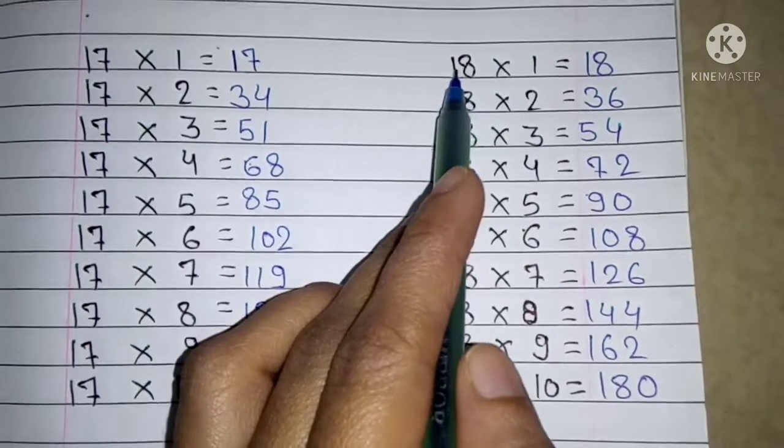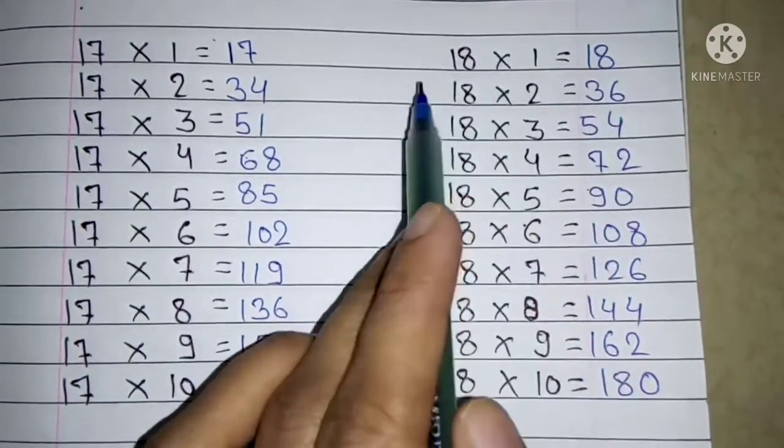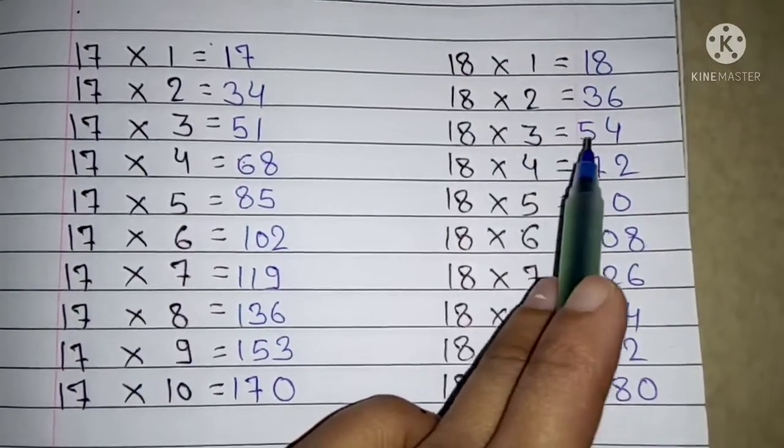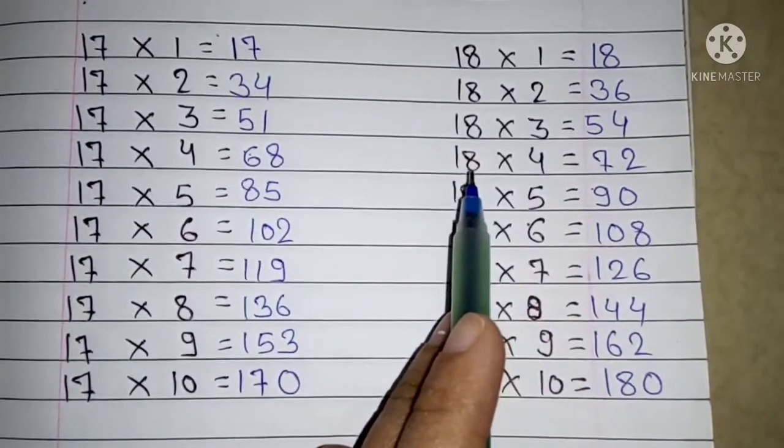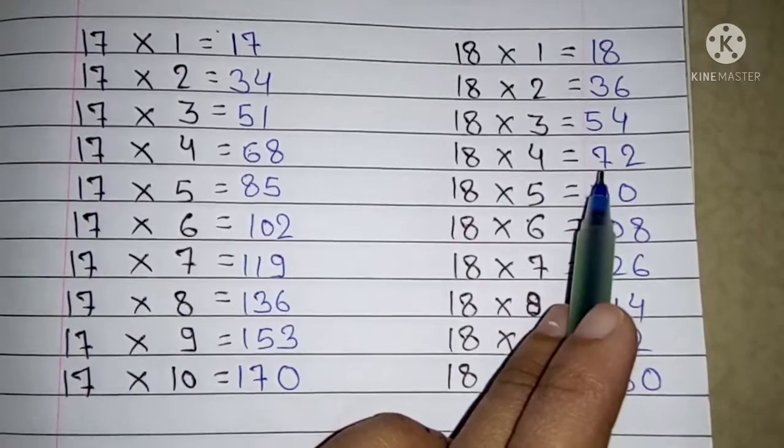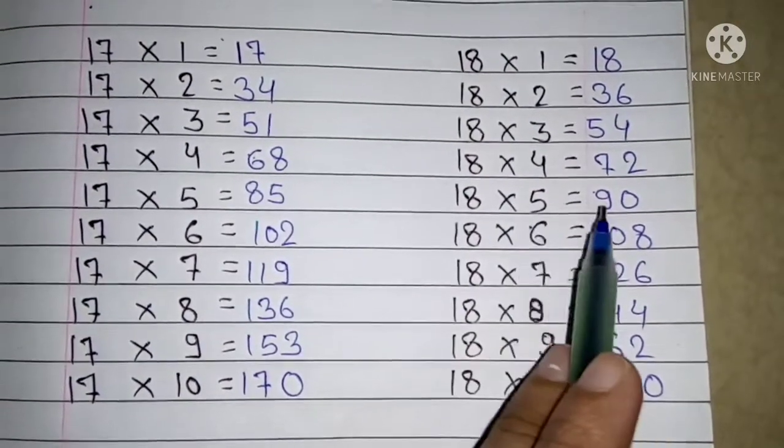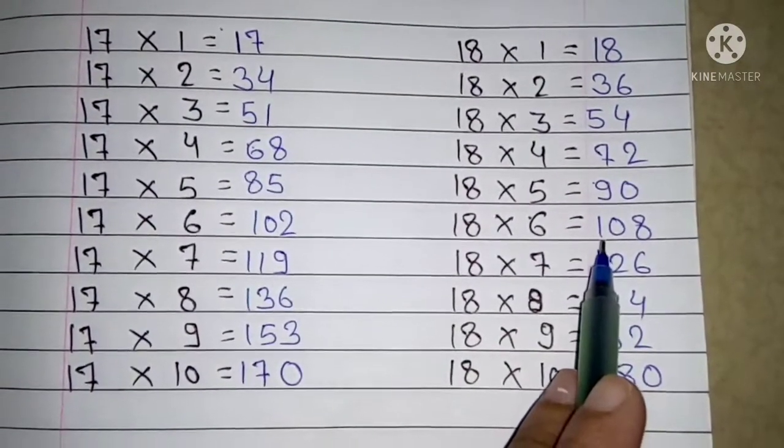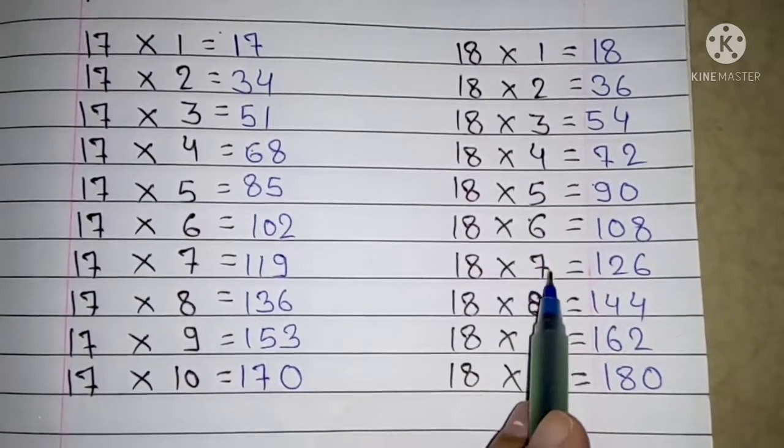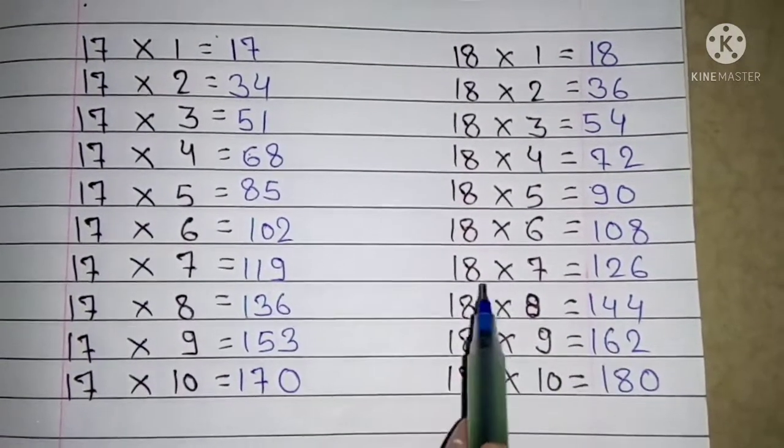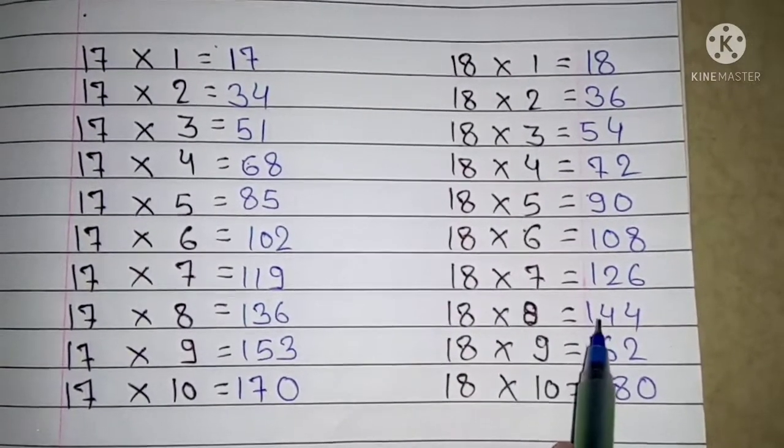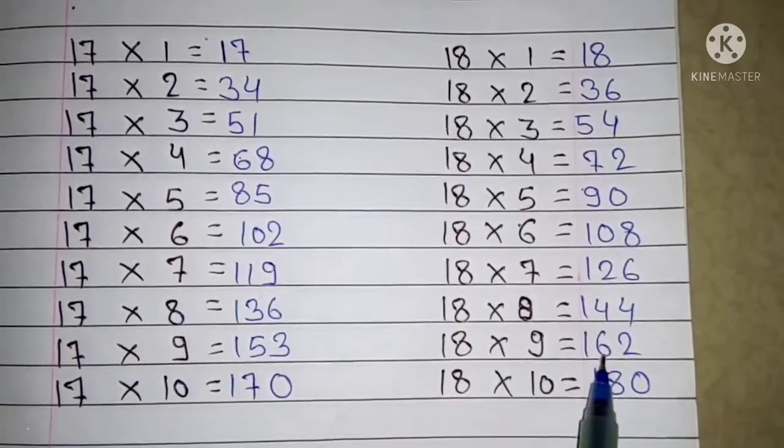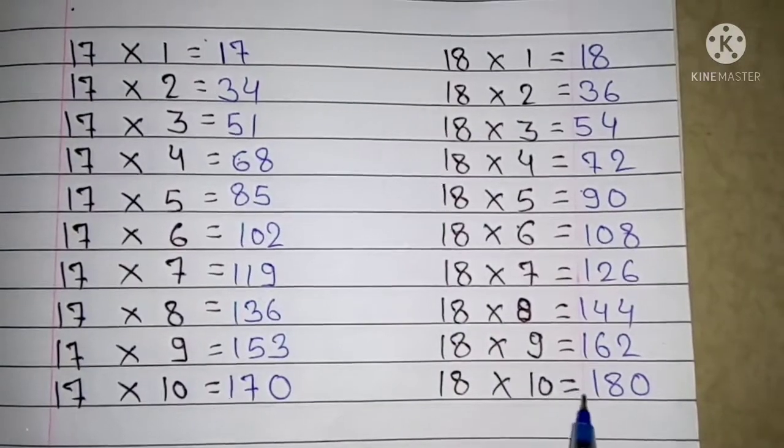Next table 18: 18 ones are 18, 18 twos are 36, 18 threes are 54, 18 fours are 72, 18 fives are 90, 18 sixes are 108, 18 sevens are 126, 18 eights are 144, 18 nines are 162, 18 tens are 180.